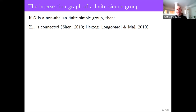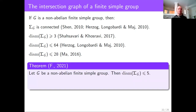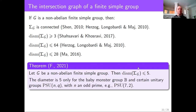Regarding the diameter of σ(G) for finite simple non-abelian G: in 2017, Shasavari and Khosravi proved 3 is a lower bound, and this is tight. The work of Herzog et al. implied an upper bound of 64, reduced to 28 by Maher in 2016. Last year, I proved that for any non-abelian finite simple group G, the diameter of the intersection graph is always at most 5. This value of 5 is achieved for the baby monster group B, and the only groups achieving it are the baby monster and certain unitary groups PSU(n,q) with n and n prime. Currently the only known such unitary example is PSU(7,2), though there are likely additional examples.